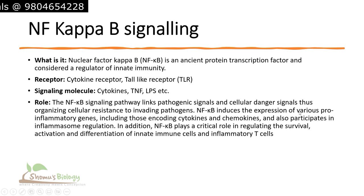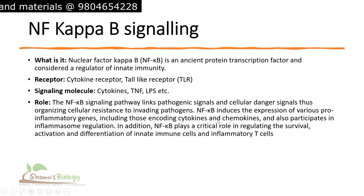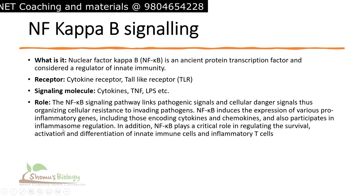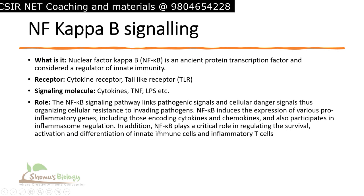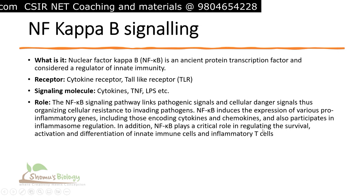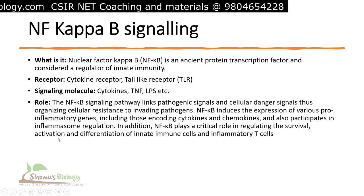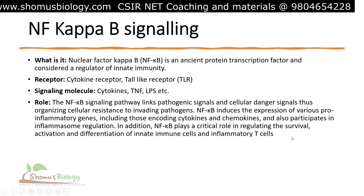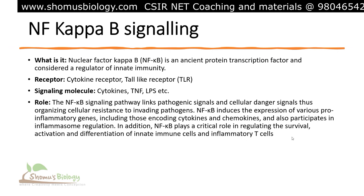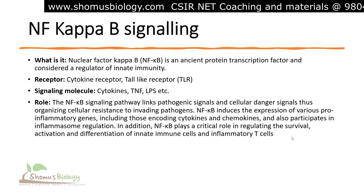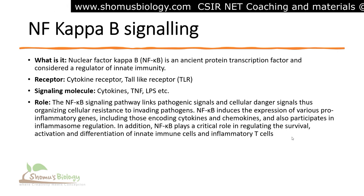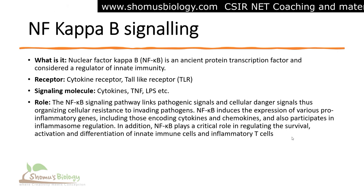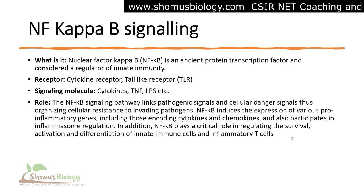NF-kappa-B induces the expression of various pro-inflammatory genes, including those encoding cytokines and chemokines, and also participates in inflammasome regulation. In addition, NF-kappa-B plays a crucial role in regulating the survival, activation, and differentiation of innate immune cells and inflammatory T cells — essentially maintaining the immune cells that fight infective agents in natural immunity or helping build cell-mediated immunity.